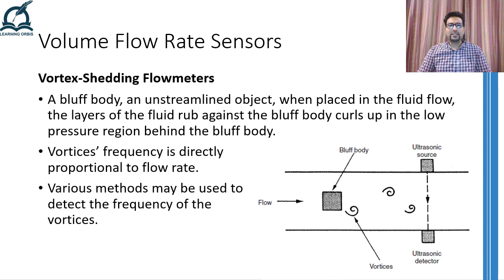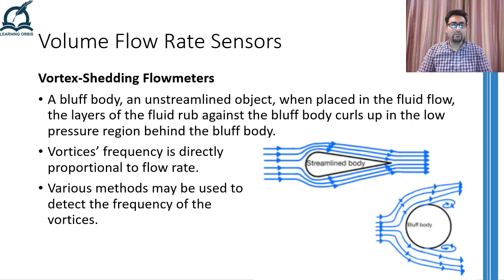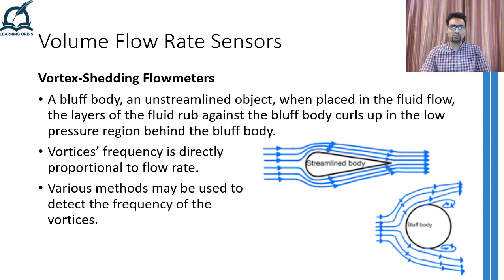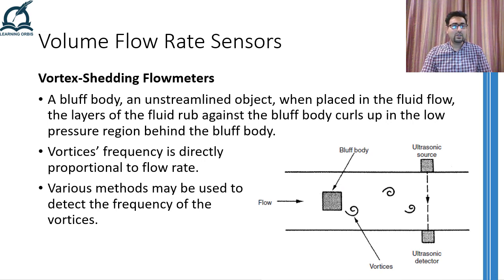The next flow rate sensor is relatively a new one in the lot. It is called a vortex shedding flow meter and it creates an obstruction in the flow of the fluid using an un-streamlined object called a bluff body. The un-streamlined structure causes the fluid flowing past it to rub against the body and slow down. As the layers near the bluff body slow down, they break from the layers which are away from it, and the broken layers curl up and create vortices downstream. The frequency of these vortices being generated is directly proportional to the flow rate.